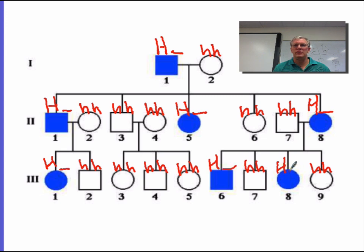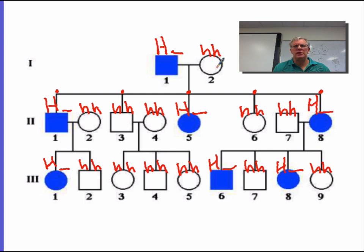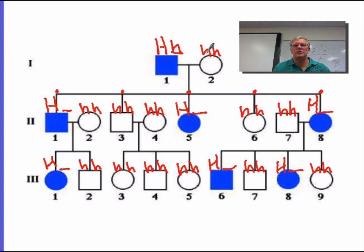Let's see if in this situation we can. In order to figure out the blanks, we're going to have to look at the kids. The kids of this family would be here, here, here, here, here, and here. Keep in mind that this mother — the only thing she can give to her kids is a little h. So all of these kids right here that are little h, little h got one of their little h's from mom. That means the other little h must have come from dad. So dad has to have little h as well. One little h came from mom because that's all she could give, and the other little h came from dad.